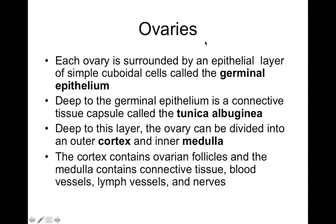Each ovary is surrounded by an epithelial layer called germinal epithelium, and deep to that is the tunica albuginea — a tougher fibrous tissue. Deep to the tunica albuginea, we have the cortex and medulla. The cortex contains all the follicles: primordial, which give rise to primary, secondary, and tertiary follicles containing oocytes that are ovulated after puberty. The medulla is a deeper area full of blood vessels, nerve fibers, and lymphatics that supply nutrients, drain excess fluid, and provide nerve sensation.